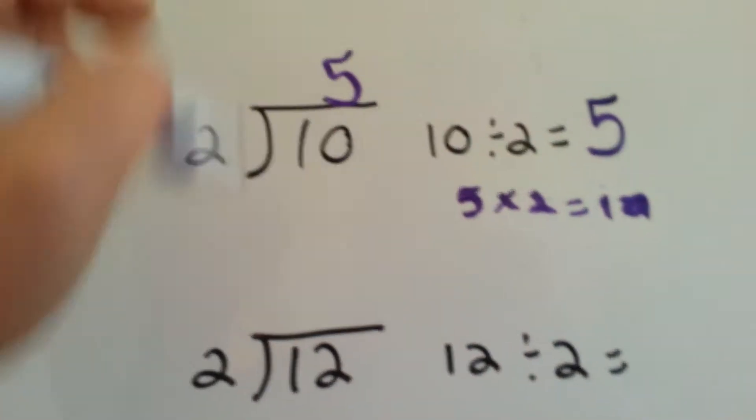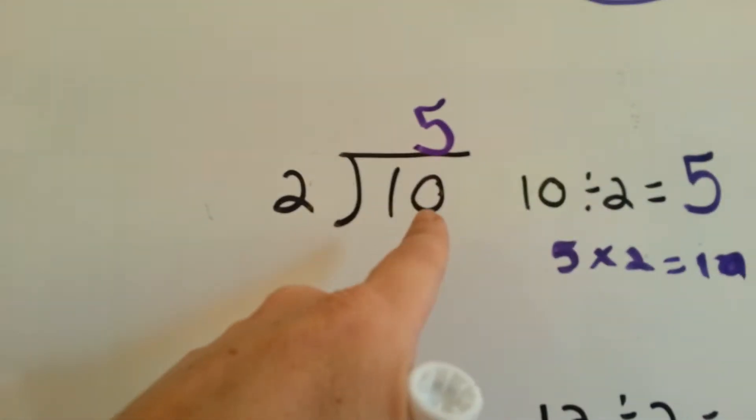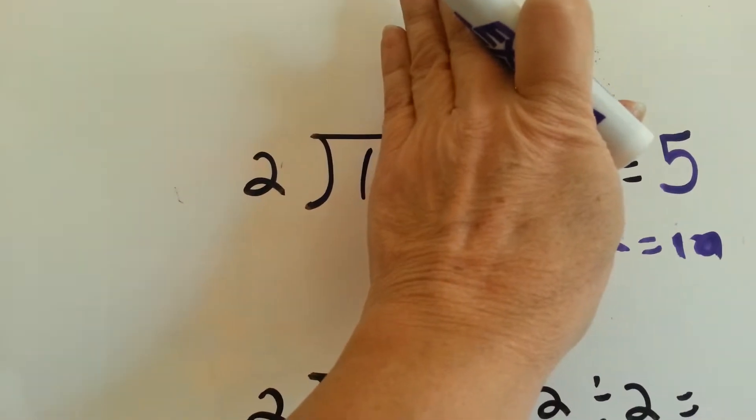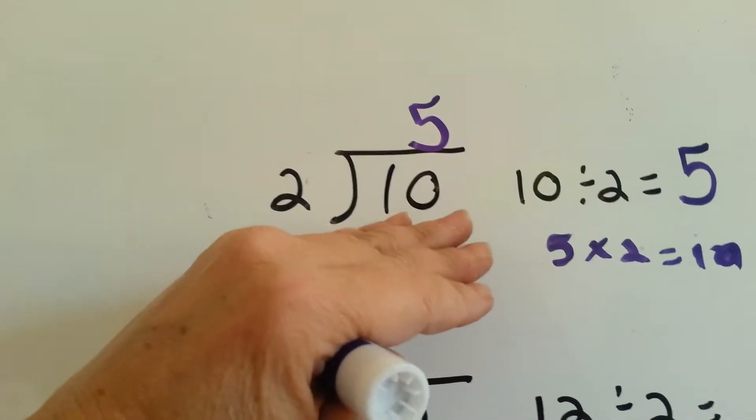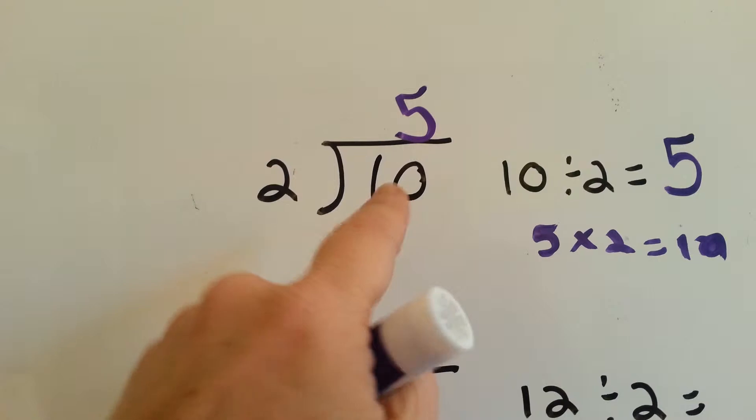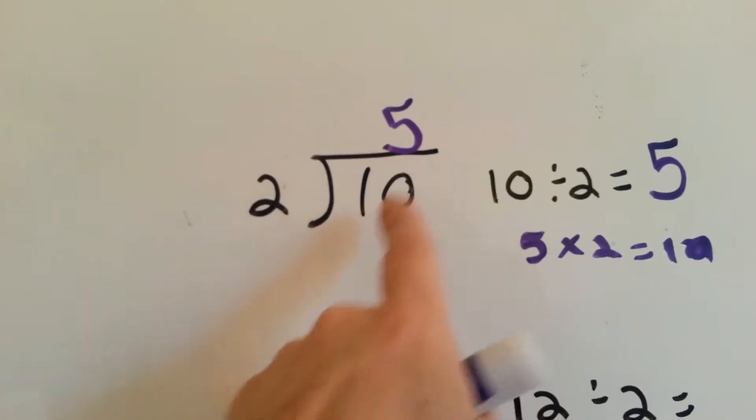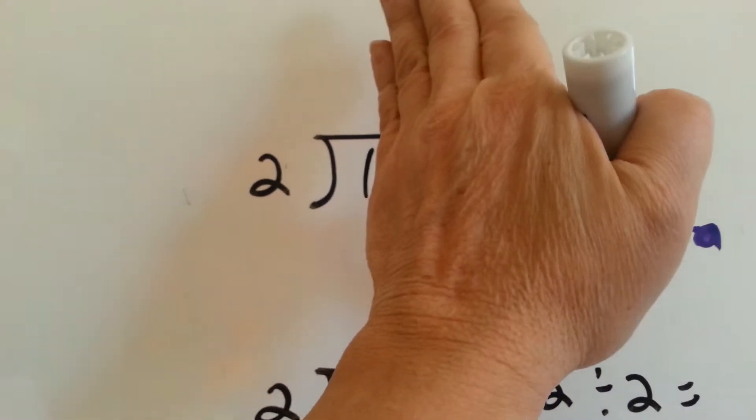On this type of answer, we put the 5 above the 0. Because we didn't say how many times does 2 go into 1. We said how many times does 2 go into 10. So by putting the 5 above the 0, it lets everyone know that we use the entire 10 and not just the 1. See that?